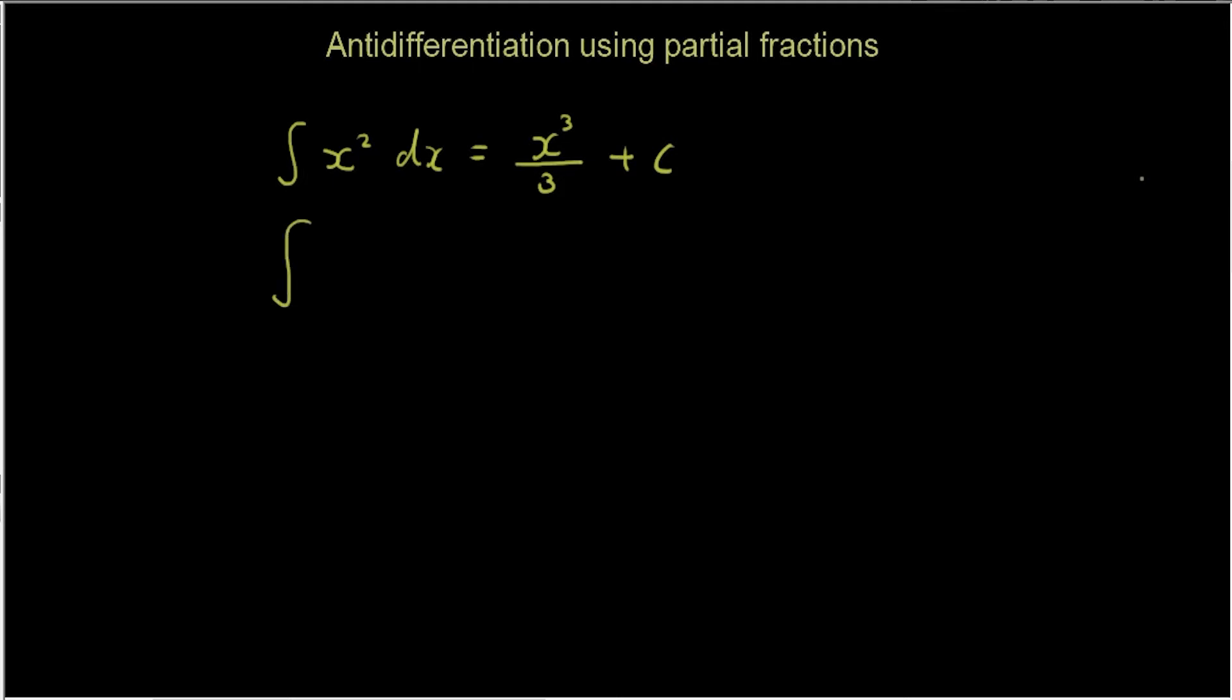But if you want to antidifferentiate something harder, let's say I have 3x divided by (x - 2)(x + 1), you want to antidifferentiate that dx. That becomes very hard because where do you add the power? It's not very obvious. So in order to do this we need to go back to the very beginning, going back to grade 3 math for example.